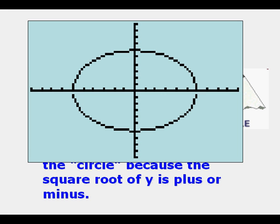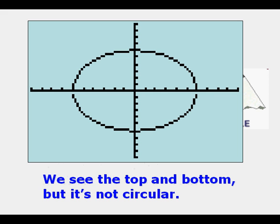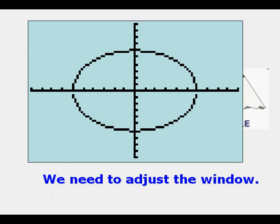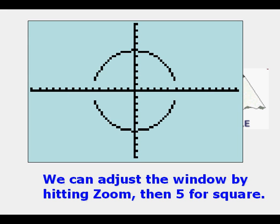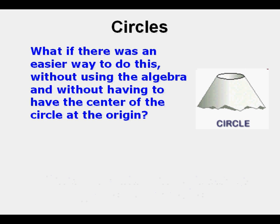The reason it's not is because of the proportional distortion in the regular view screen window. We can adjust that by hitting zoom and then 5 for square. What if there was an easier way to do this without using the algebra and without having to have the center of the circle at the origin?